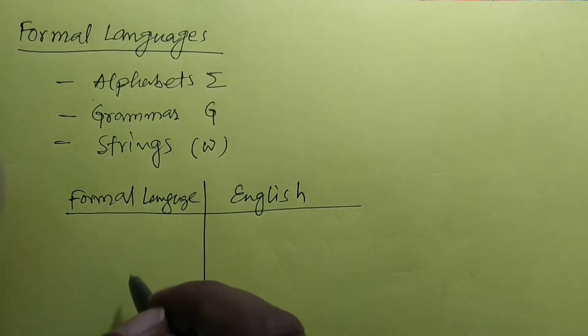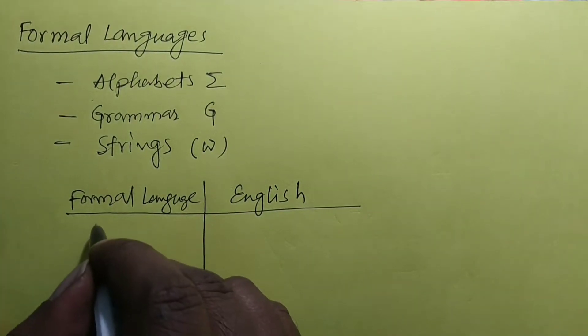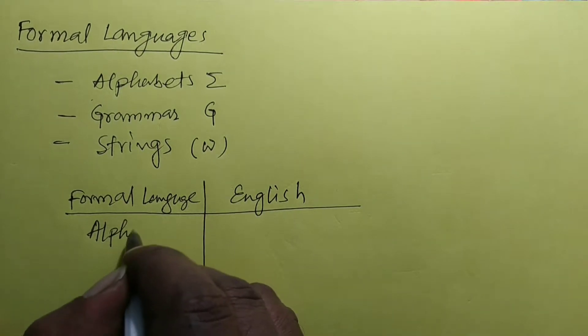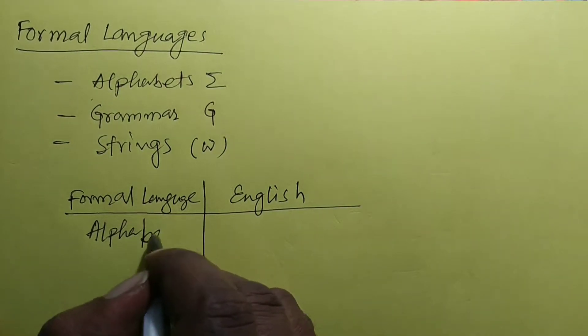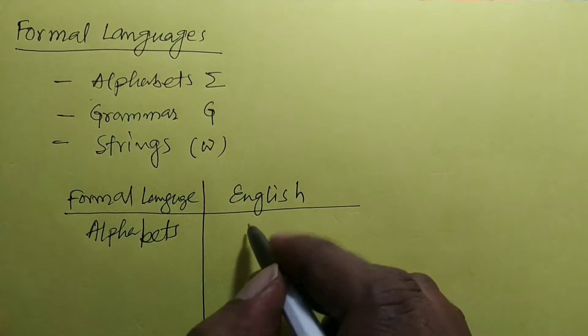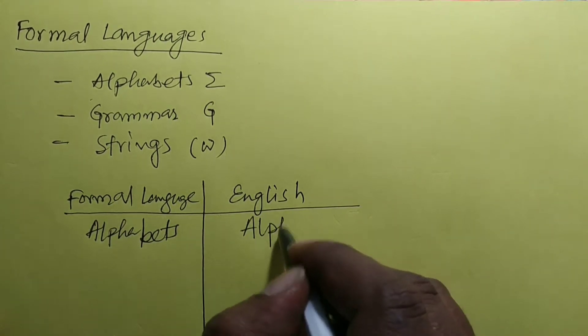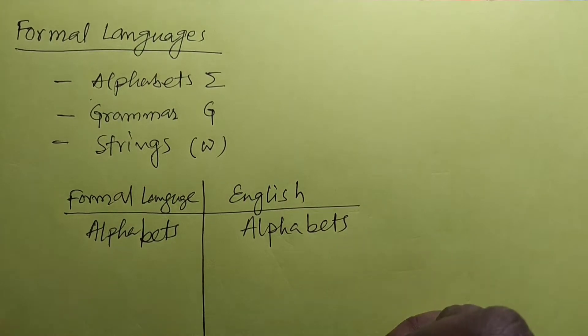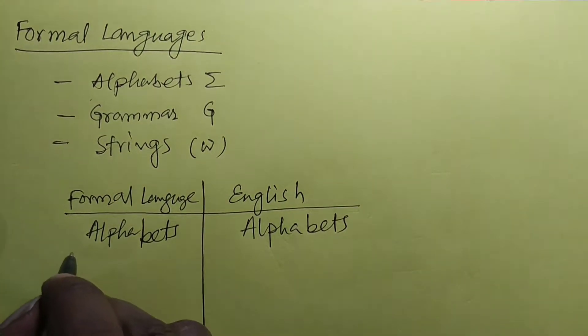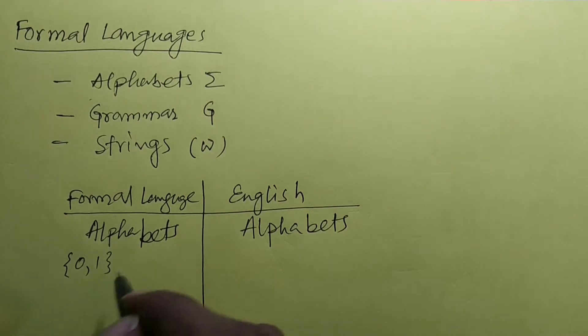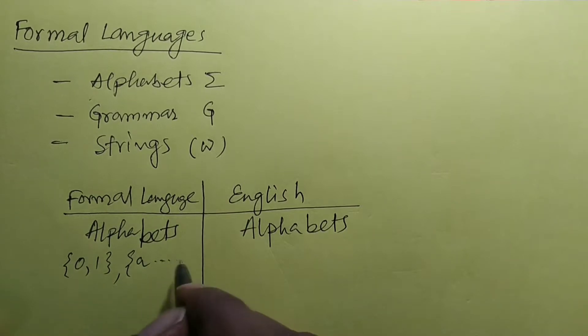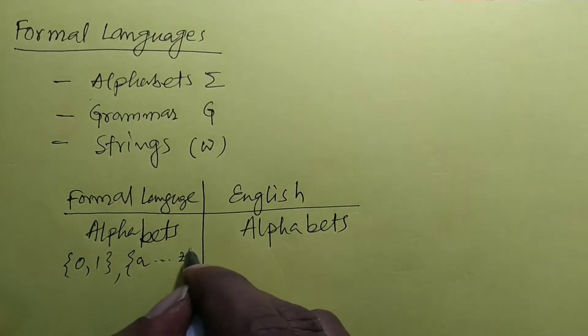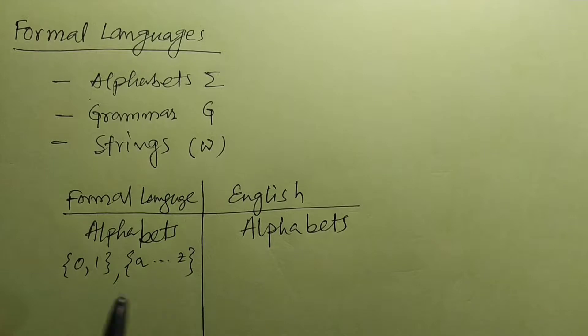We can see that alphabets in English also there are alphabets. Now here in formal language the alphabets may be anything - it may be binary symbols, it may be small a to small z, it may be anything.